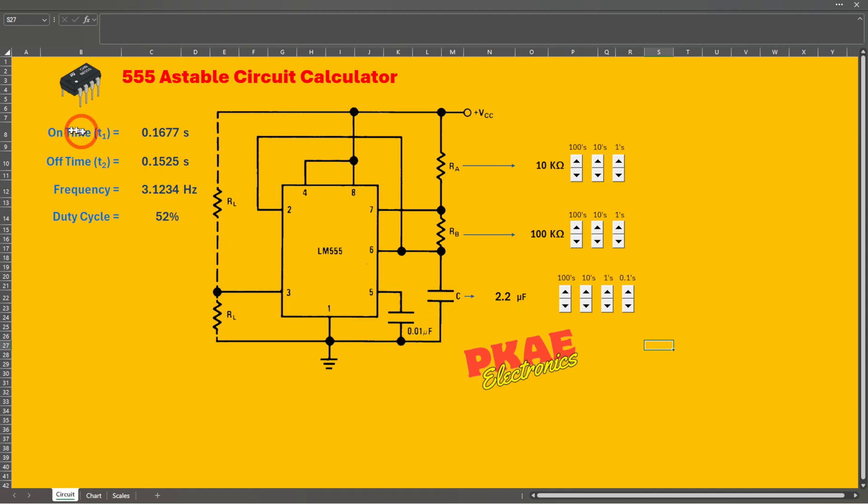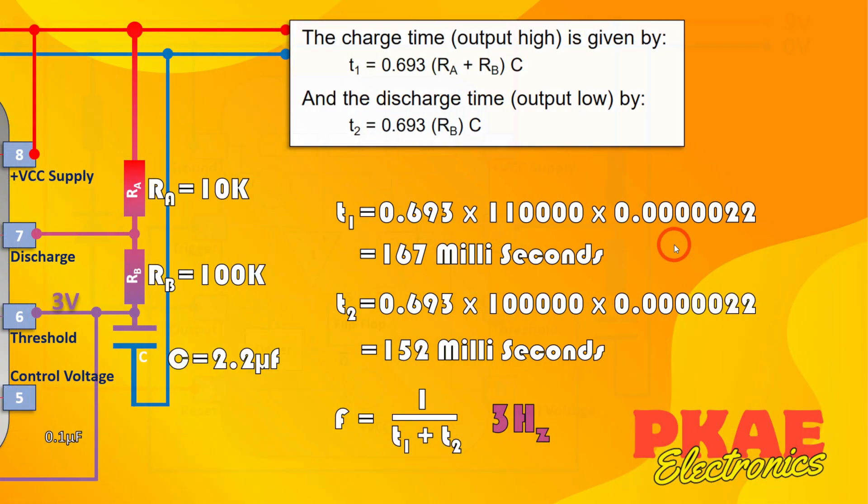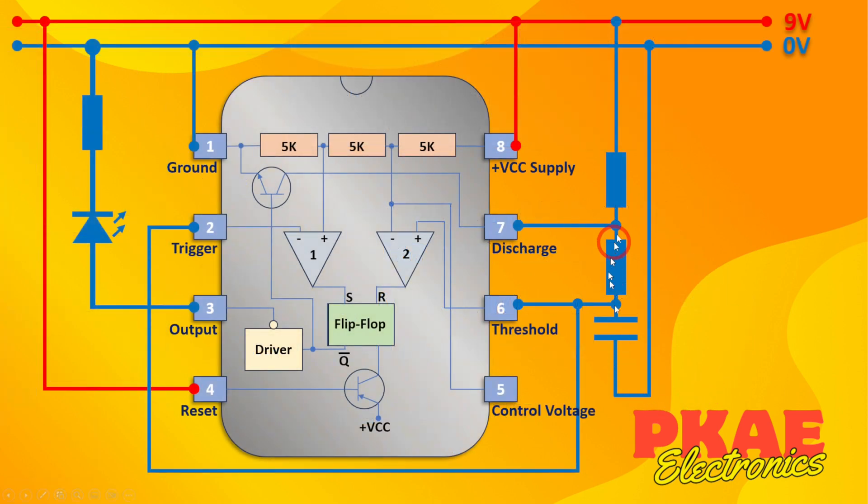This tells us the on time, or T1, was 167 milliseconds as I just said, and the off time was 152, and the frequency was around 3 hertz. Now if I look at this chart tab, this is what I mean by duty cycle. The spreadsheet tells us that the duty cycle was 52 percent. That means this on time is 52 percent of the entire cycle, whereas the off time is only 48 percent of the entire cycle. You can never achieve a 50 percent duty or less with the standard circuit as it's shown there.